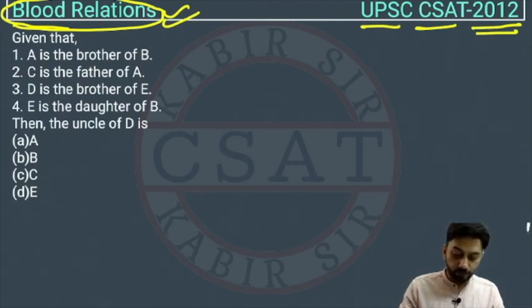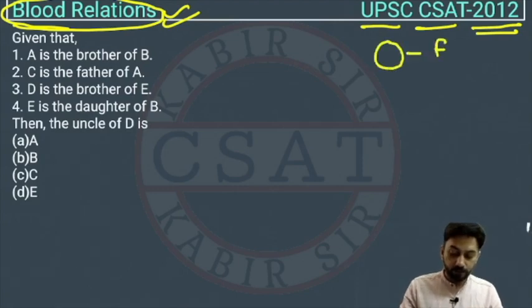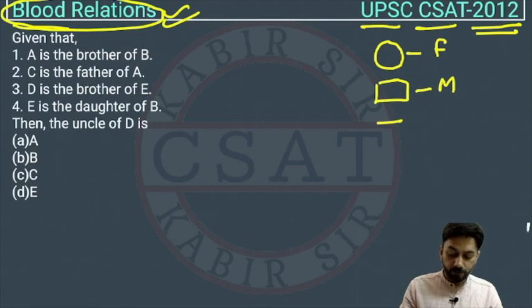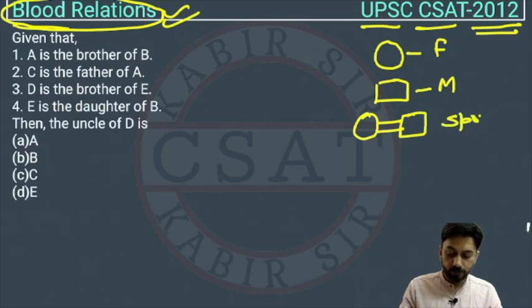A circle represents a female, and a rectangle represents a male. Spouses — husband and wife — are represented by an equal symbol.